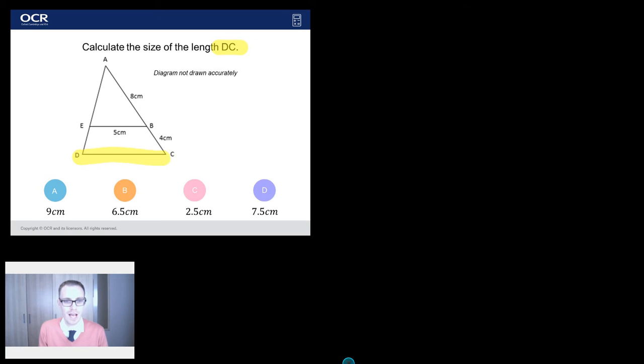So firstly let's make sure we know what we're doing here. DC is that little length there and the other thing I wanted to highlight is that diagram not drawn accurately. It's annoying that right when you keep seeing that. Why did you put that on there? Well that's to stop you just getting your ruler out and measuring it.